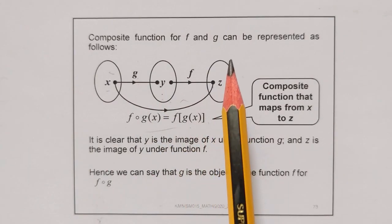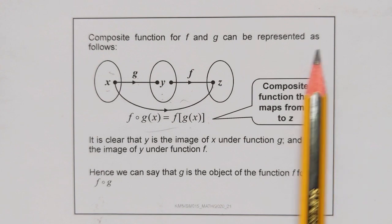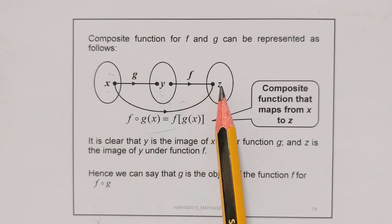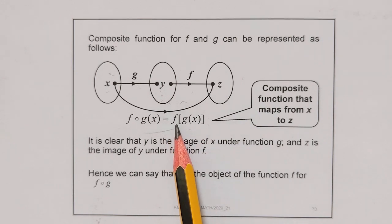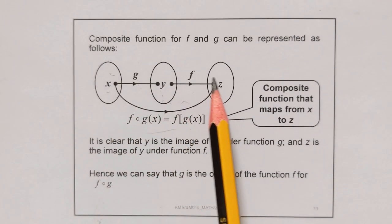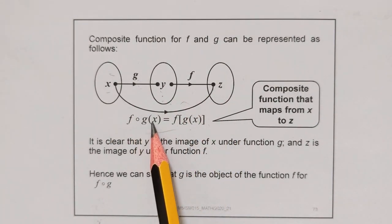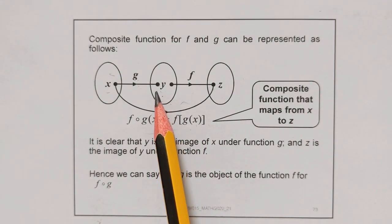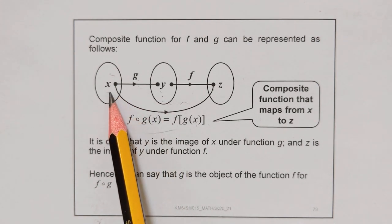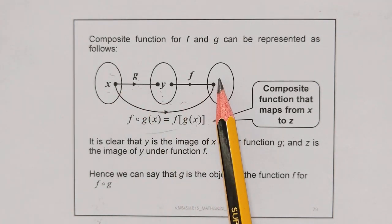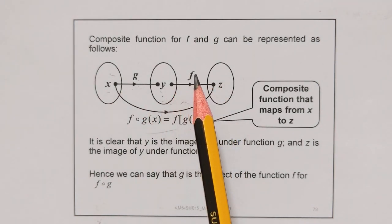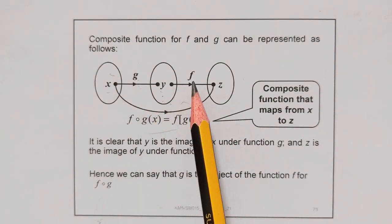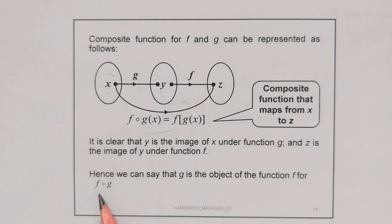Composite function for f and g can be represented as follows. g(x) equals y, and f(y) equals z. So this is the composite function that maps from x to z, which is f of g(x), or you can write it as f(g(x)). It is clear that y is the image of x under function g, and z is the image of y under function f. So we can say that g is the object for the function f, which is f of g.